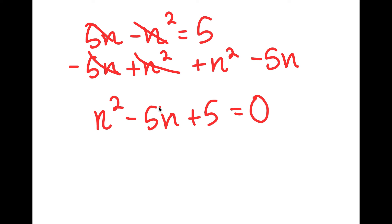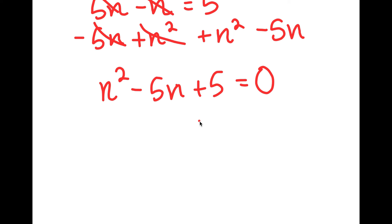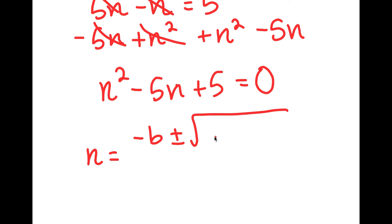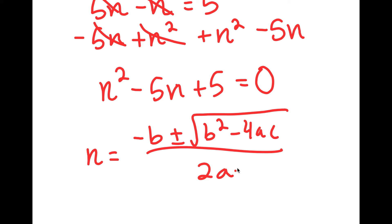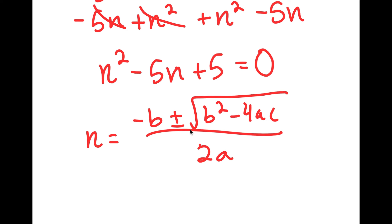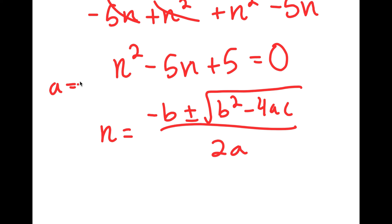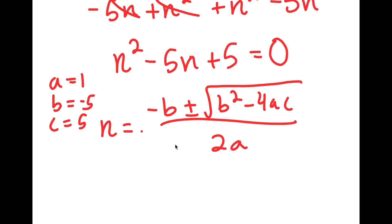From here, to solve this, I can use the quadratic formula, which is negative b plus or minus the square root of b squared minus 4ac, all over 2a. In this case, a is 1, b is negative 5, and c is positive 5.